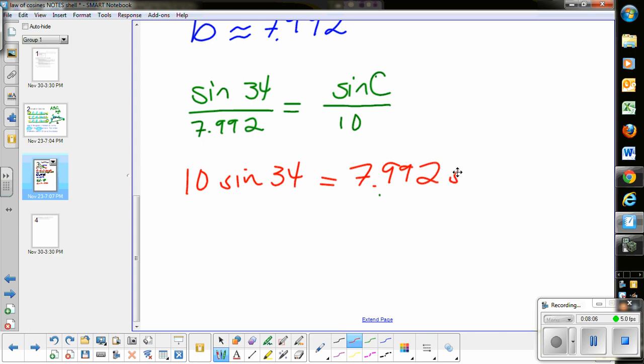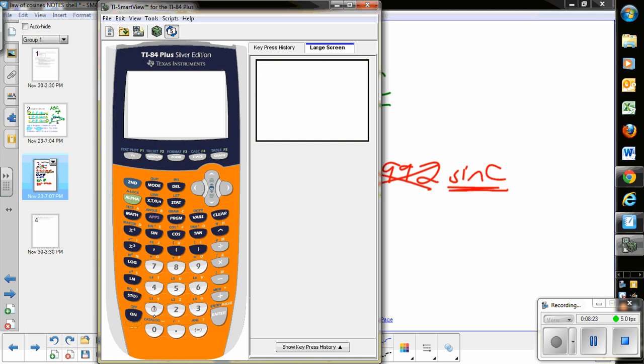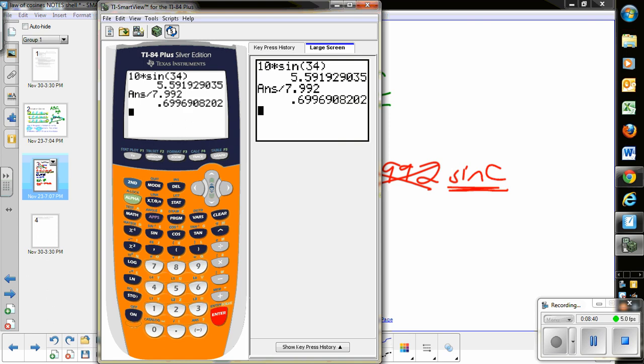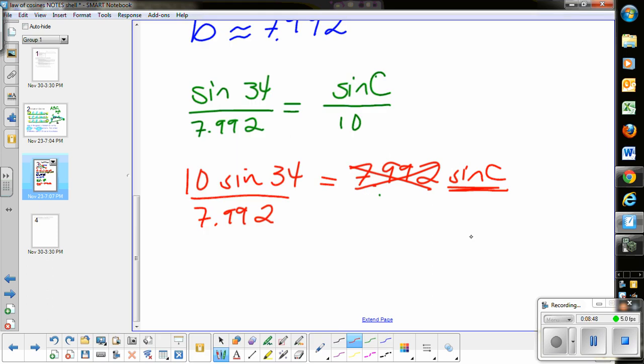We'll take sine of 34 degrees over 7.992 that we just found, and set that equal to sine of angle C divided by 10, because 10 was across from angle C. At this point, like we did in the previous lesson, you cross multiply. Then the next step is division by 7.992 to get sine of C. Then use inverse sine. On my calculator, I do 10 times sine of 34, divided by 7.992. That's the sine of angle C, so I do inverse sine of that answer.